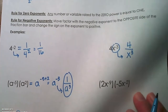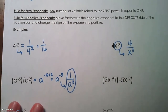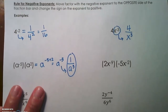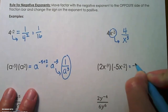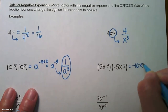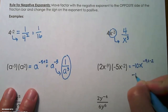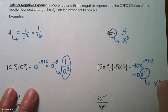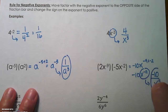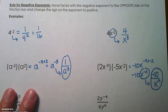The next one has lots of numbers: 2x to the negative 9 times negative 5x to the negative 2. We multiply 2 times negative 5, which gives us negative 10, and add the exponents: x to the negative 9 plus negative 2, giving us negative 10x to the negative 11. The only thing with a negative exponent is x, so it goes to the denominator and the exponent becomes positive. The negative 10 stays in the numerator — remember that exponent rules only apply to exponents, so the negative 10 is a coefficient and stays where it is.